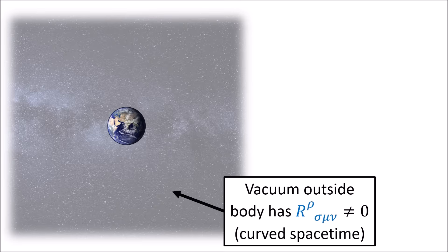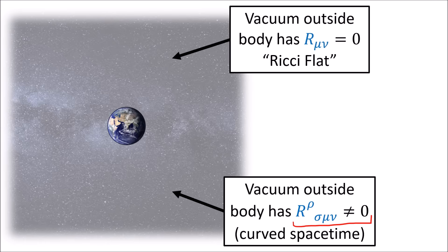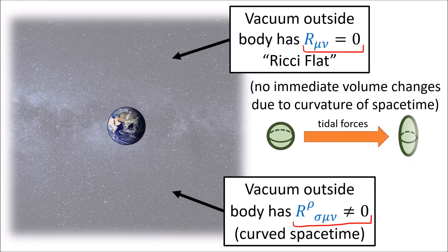The vacuum outside the mass still involves curved spacetime, because the Riemann curvature tensor is non-zero. But the Ricci tensor is zero, meaning there are no immediate changes in the volume of a group of test particles outside the Earth as they move along geodesics. We only get tidal forces that squash and stretch the test particles without causing any immediate changes in volume.